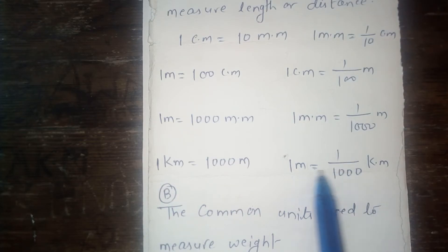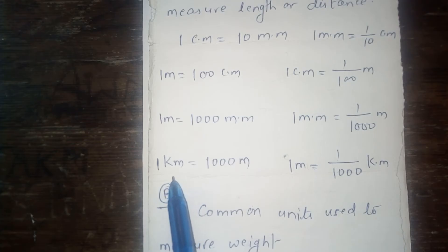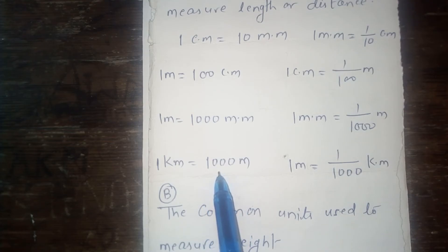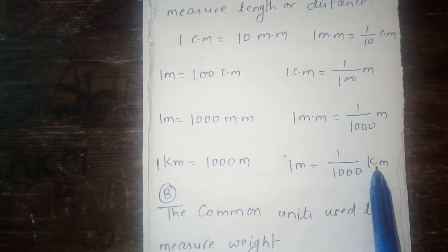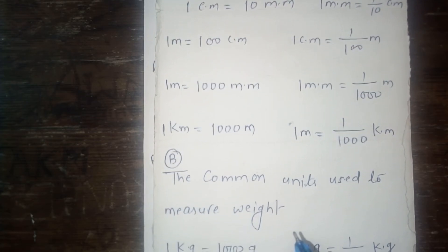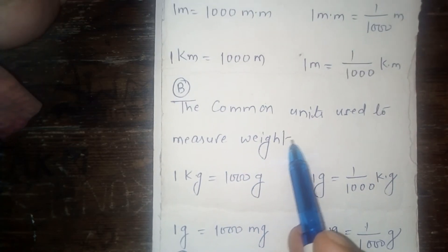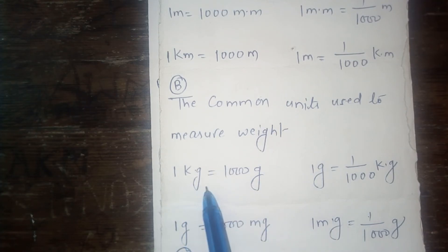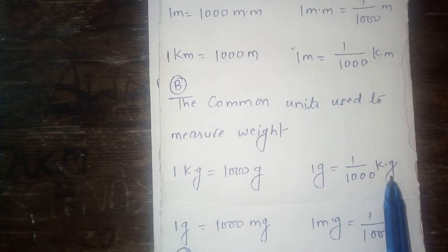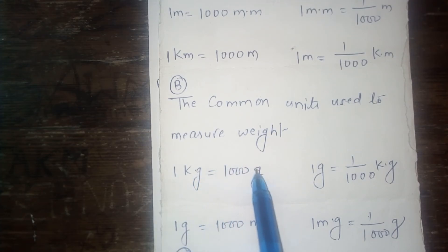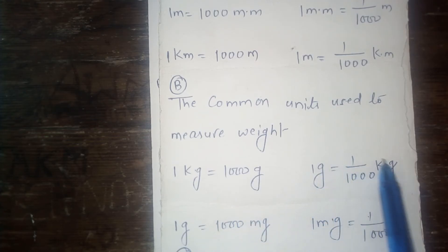When kilometer is converted to meter, then multiply by 1000, and when meter is converted to kilometer, then divide by 1000. Our next measuring units are the common units used to measure weight. 1 kilogram is equal to 1000 grams, and 1 gram is equal to 1 upon 1000 kilogram.